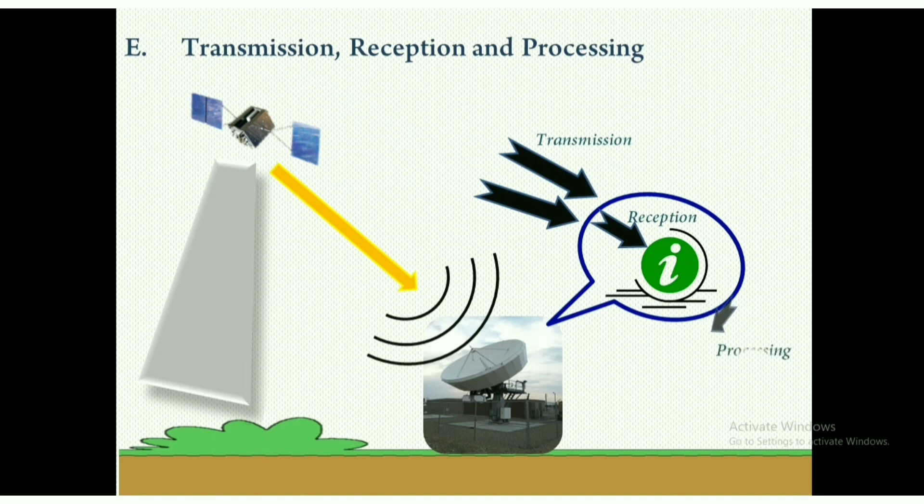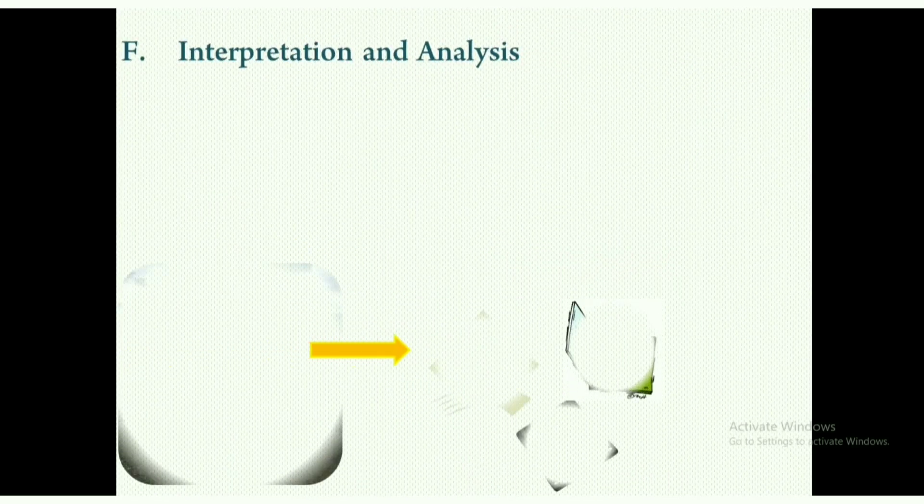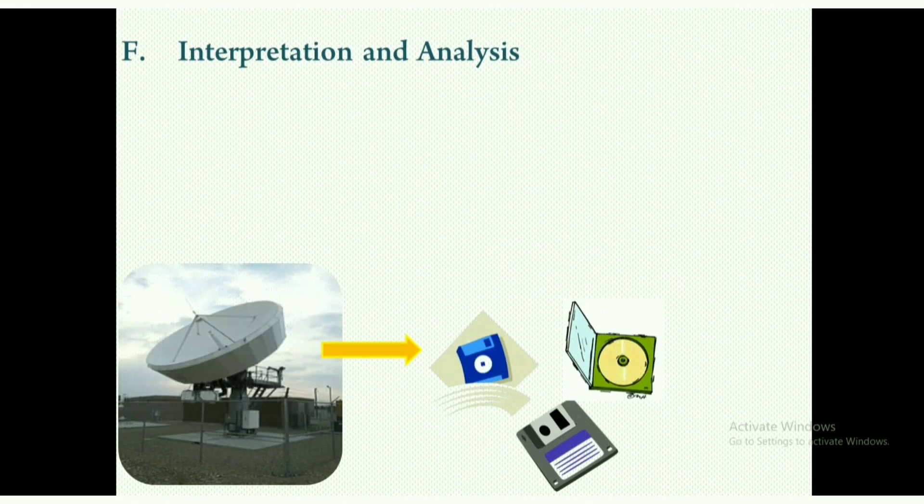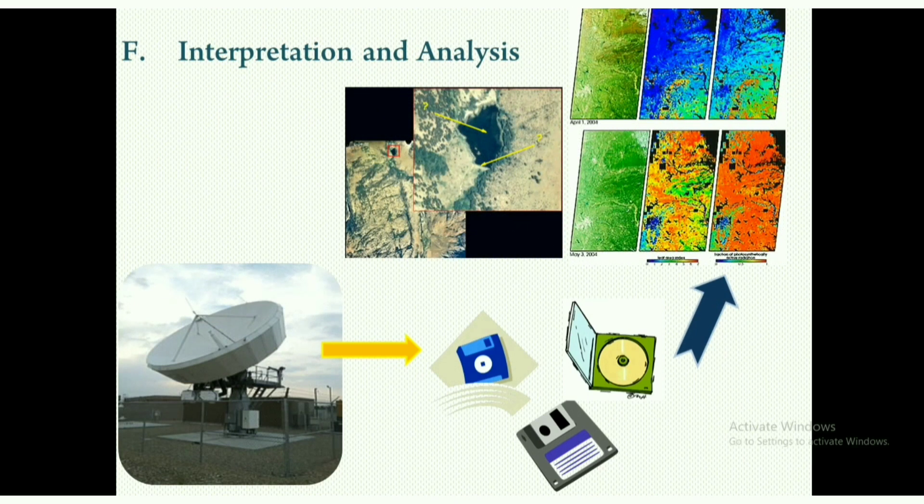The recorded data or information from the sensor are transmitted to a ground operating station. Then the station receives the recorded data in a raw digital format. The raw data are processed to check whether there are some distortions or not to the image. After processing, the data are translated to a standardized format on a tape, disk, or CD. The receiving stations are run both by government agencies as well as commercial companies.